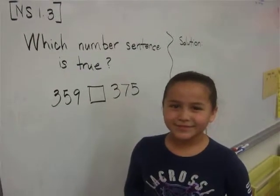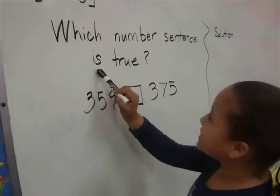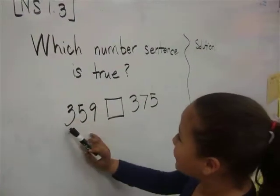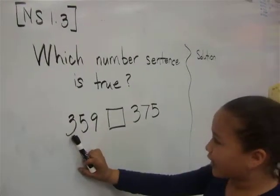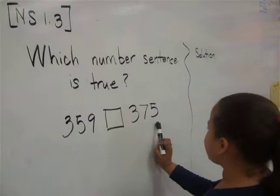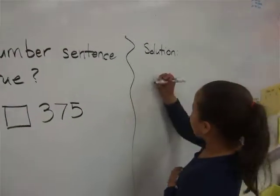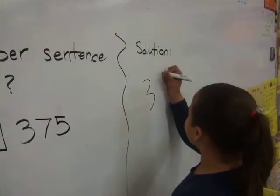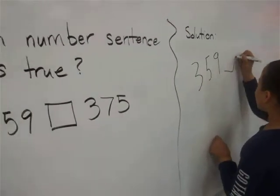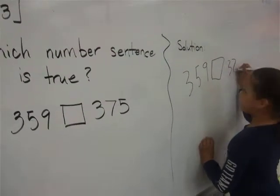Hi, my name is Andrea Meadows. Which number sentence is true? 359 blank 375.